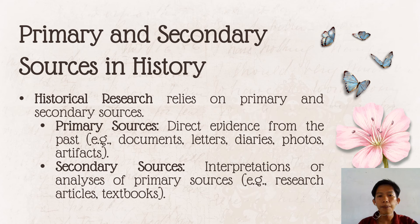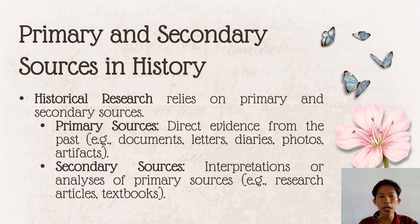Primary sources are the direct evidence from the past — examples include documents, letters, diaries, photos, and artifacts. These are direct evidence gathered from the past. Secondary sources are the interpretation or analysis of primary sources — examples include research articles and textbooks. Once primary sources have been interpreted or analyzed, they become what we call secondary sources.